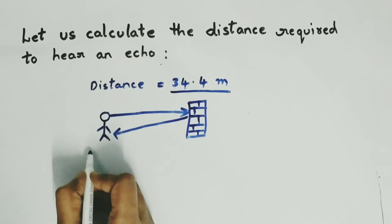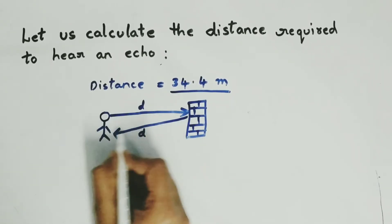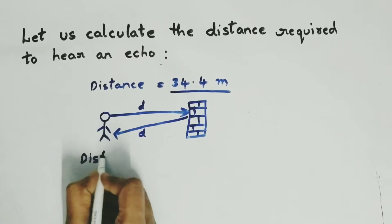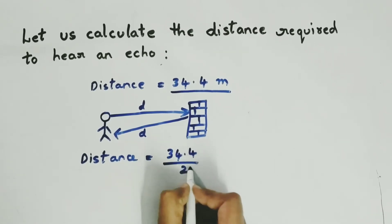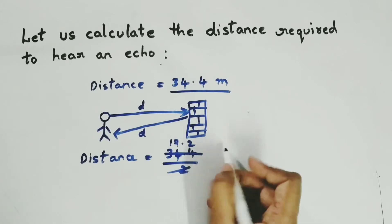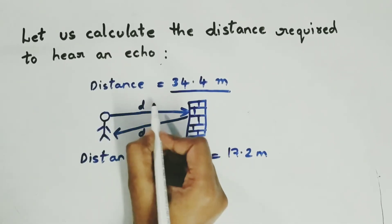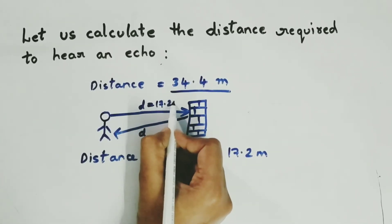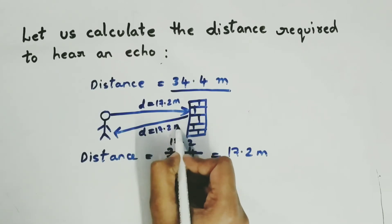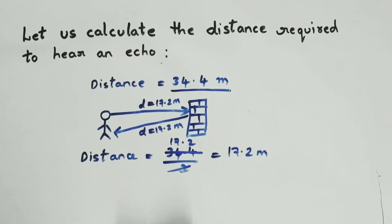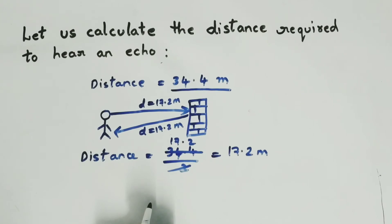So at that time what we will do is simple. Because here distance is doubled, we have two times equal distance. So let us divide: distance equals 34.4 divided by 2, that is 17.2 meters. So only the distance between the source of sound and the hard surface should be 17.2 meters, and the reflected sound should also be 17.2 meters. So together when you add you will get 34.4 meters. So this is the distance required to hear an echo.